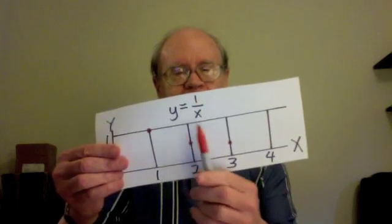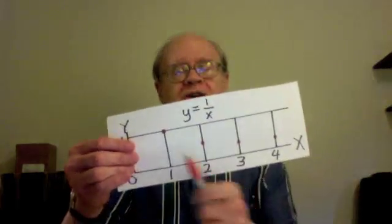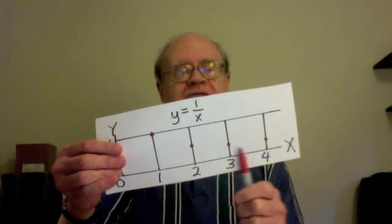And when x is 4, y is 1 fourth. So I go over 4, up 1 fourth. Again, not quite as far as going up 1 third. So I have these 4 points, each going up not as far as the previous.